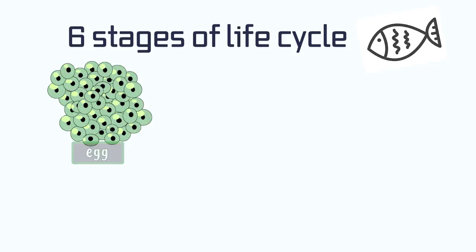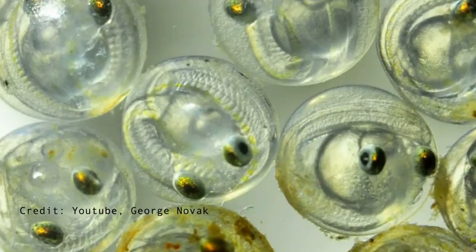The origin of fish life begins from a simple small egg. Eggs that have been fertilized from a male and female fish will develop into an embryo. The hardened eggs will hatch once the conditions are appropriate.